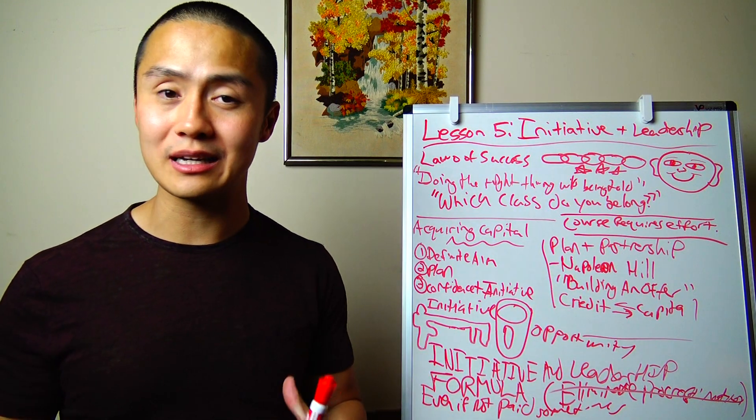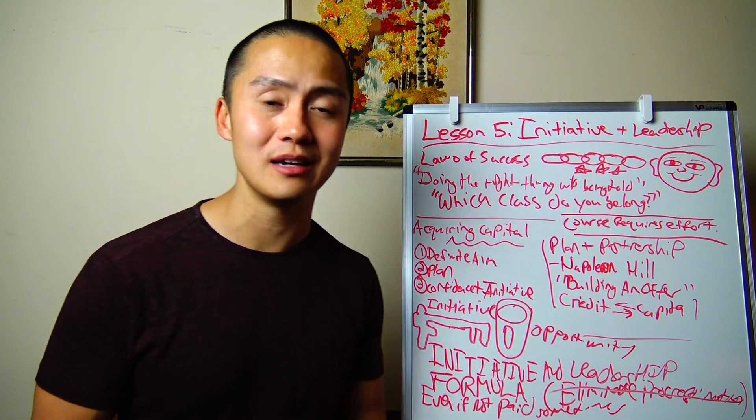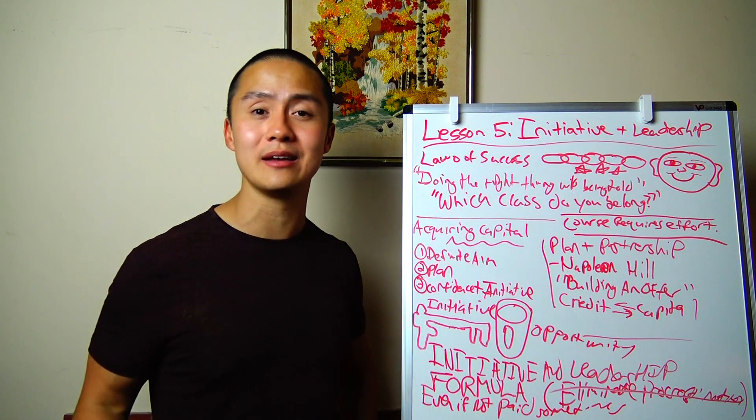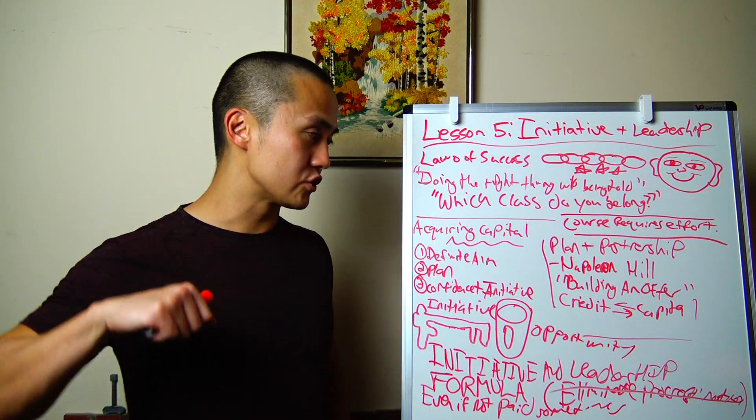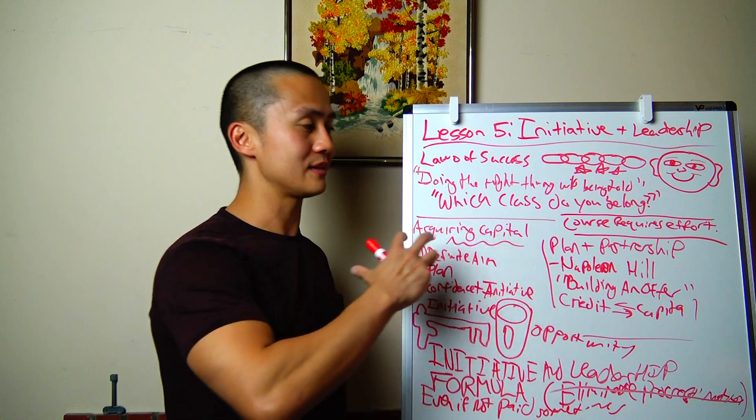He didn't even get capital. He didn't get capital just to use. He got credit and he used it in an appropriate way that was going to bring him income. So he built the offer and I really like this chapter.